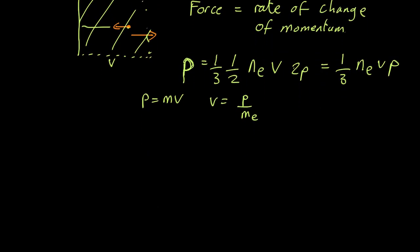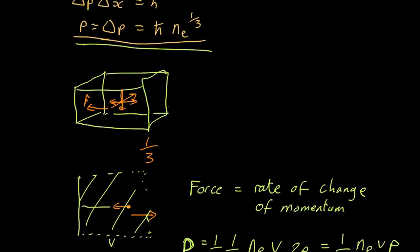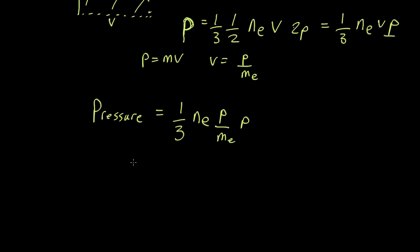So if we plug that in we find that the pressure, I'll write that in full so we don't get it confused with p for momentum, is one third number density of electrons, velocity, which is, rearrange this, that's going to be p over typical mass of an electron times momentum again, momentum coming from over here. And if we substitute in our equation for the momentum we get the pressure is equal to h-bar squared over three times the mass of an electron times the number density of electrons to the five thirds power.